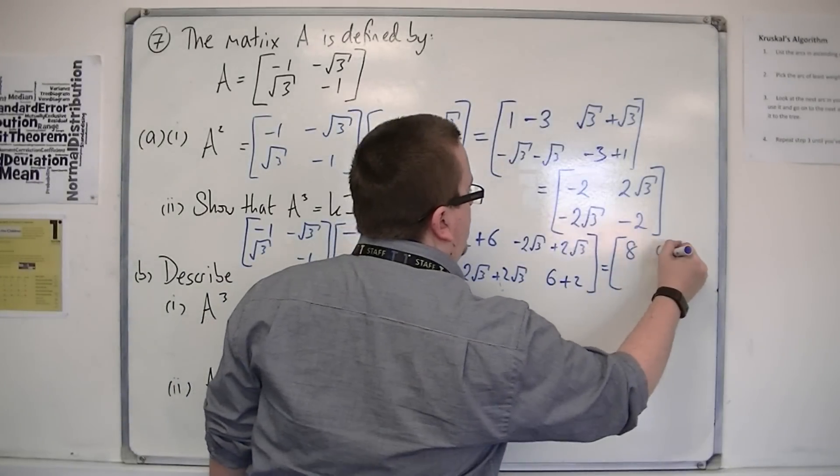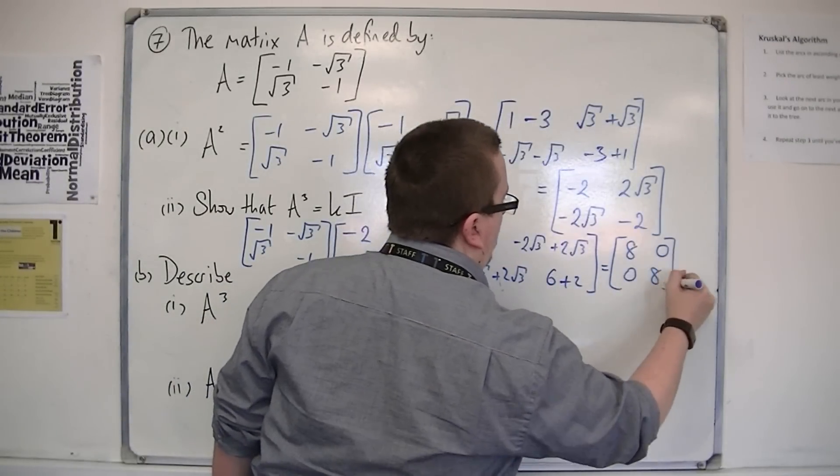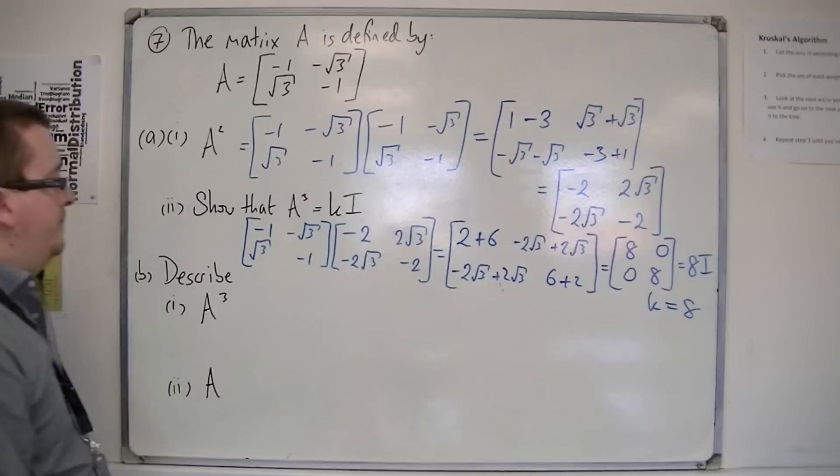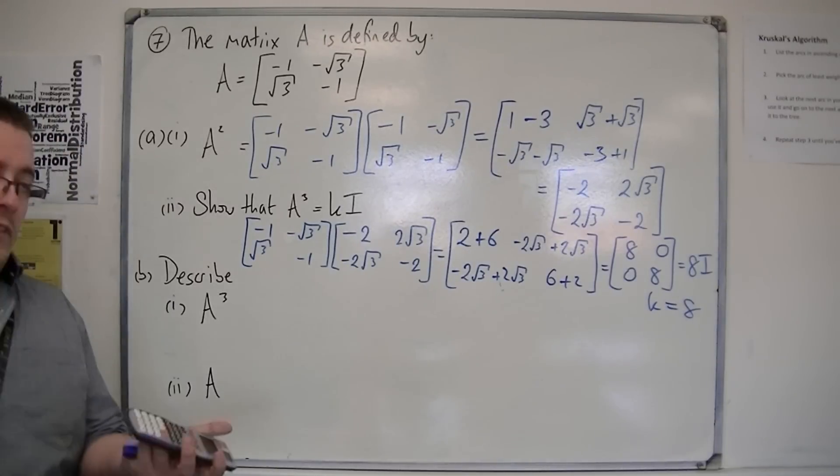So, actually, what we have is 8, 0, 0, 8, which is 8i. So, that means that K must have been 8. So, that's given us the value of K.